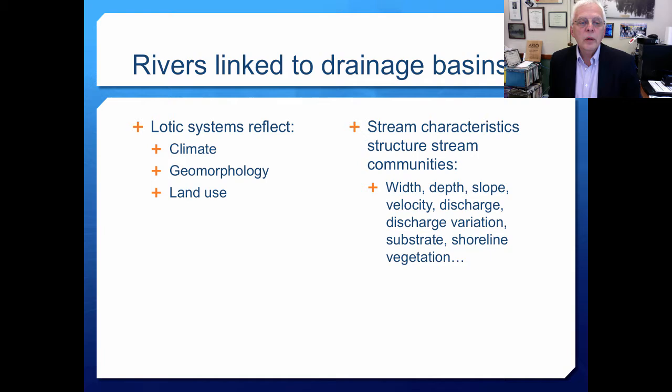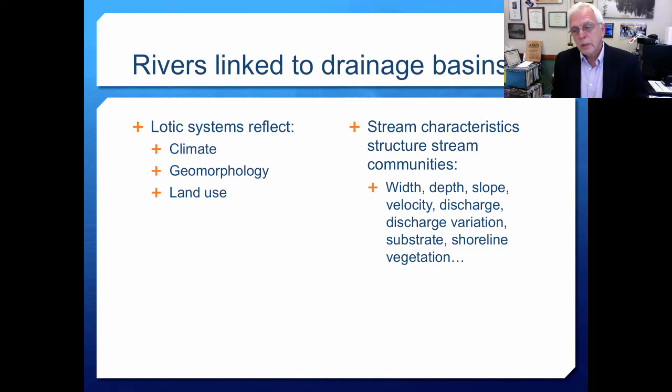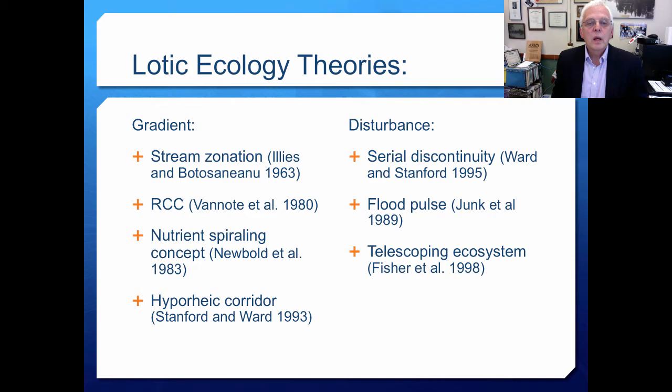Rivers are linked to the drainage basins, and lotic systems reflect all kinds of aspects of those drainage basins, including the climate, geomorphology, and land use — they are almost a direct fingerprint of those factors. Stream characteristics that structure stream communities include width, depth, slope, stream order, velocity, discharge, discharge variation, flashiness, substrate, and shoreline vegetation.